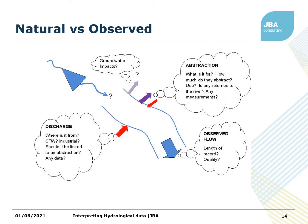Another idea that gets discussed when talking about environmental flow assessment is natural versus observed flow. In many catchments, what you actually see in the river is not the natural situation. When looking at ecology and environmental flow, you need to consider what would it look like under natural conditions. There are a number of different things that might be contributing. There are abstractions — water being taken out of the river. Questions to ask: what's it for, how much water is taken, how much is used, when is it used, does any of it get back into the river, and is any of it measured?